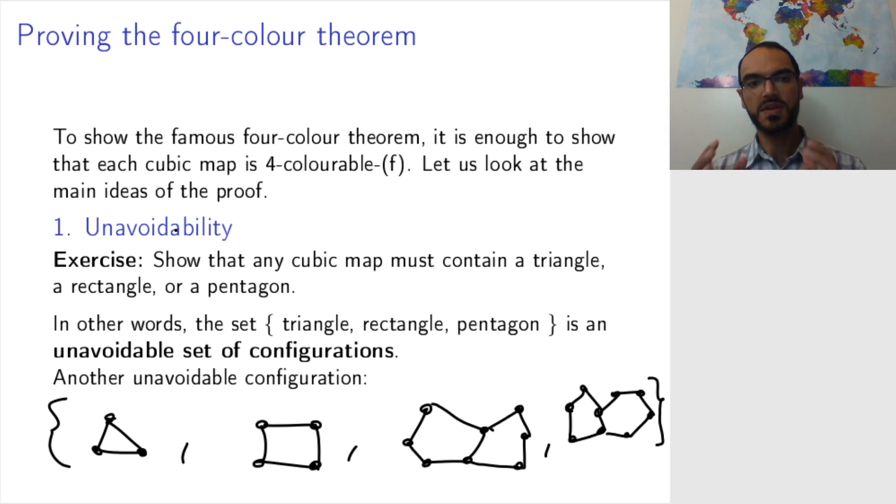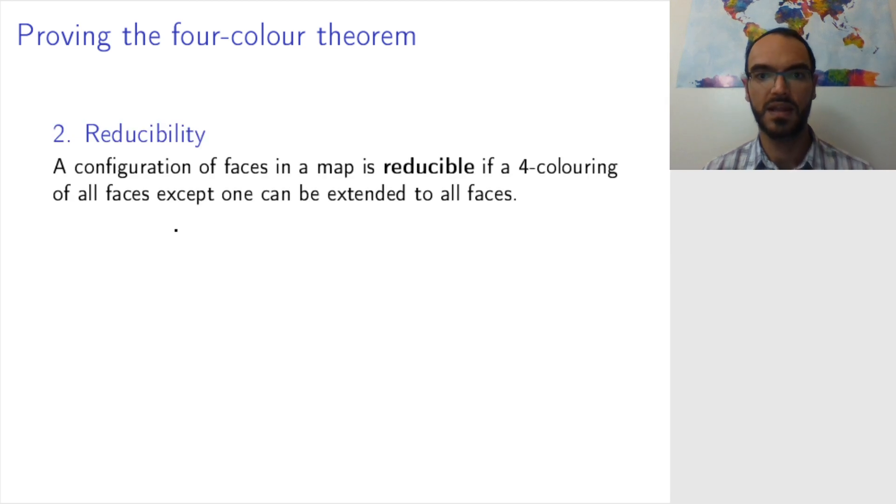So some configurations are unavoidable. That is the first part of the proof. The other idea is that of reducibility. So a configuration of faces in a map is called reducible if a four coloring of all faces except one can be extended to a four coloring of all faces.